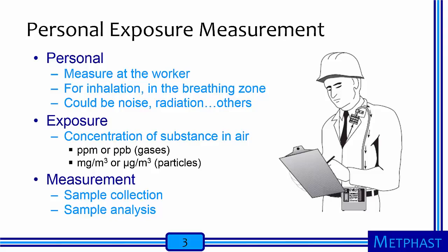Measurement involves the process of collecting a sample and how that sample will be analyzed. The figure at right depicts the collection of a sample to measure personal exposure to particulate matter. A belt-mounted air pump pulls air through a sampler mounted on the worker's lapel, coming from within the worker's breathing zone. A filter in the sampler collects particles which can be weighed for mass, then divided by the air volume sampled to get mass concentration, such as milligrams per meter cubed — which is then called the personal exposure of the worker.